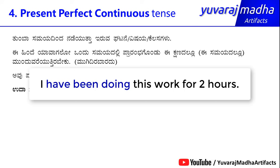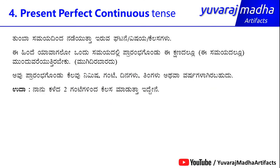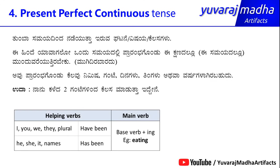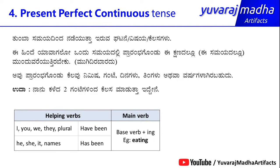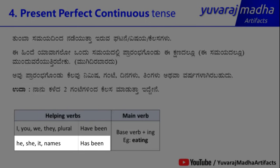The structure uses 'have been' and the main verb in the -ing form: doing, working, teaching, listening, crying. The helping verb 'have been' is used with subjects I, you, we, they, and plural subjects.